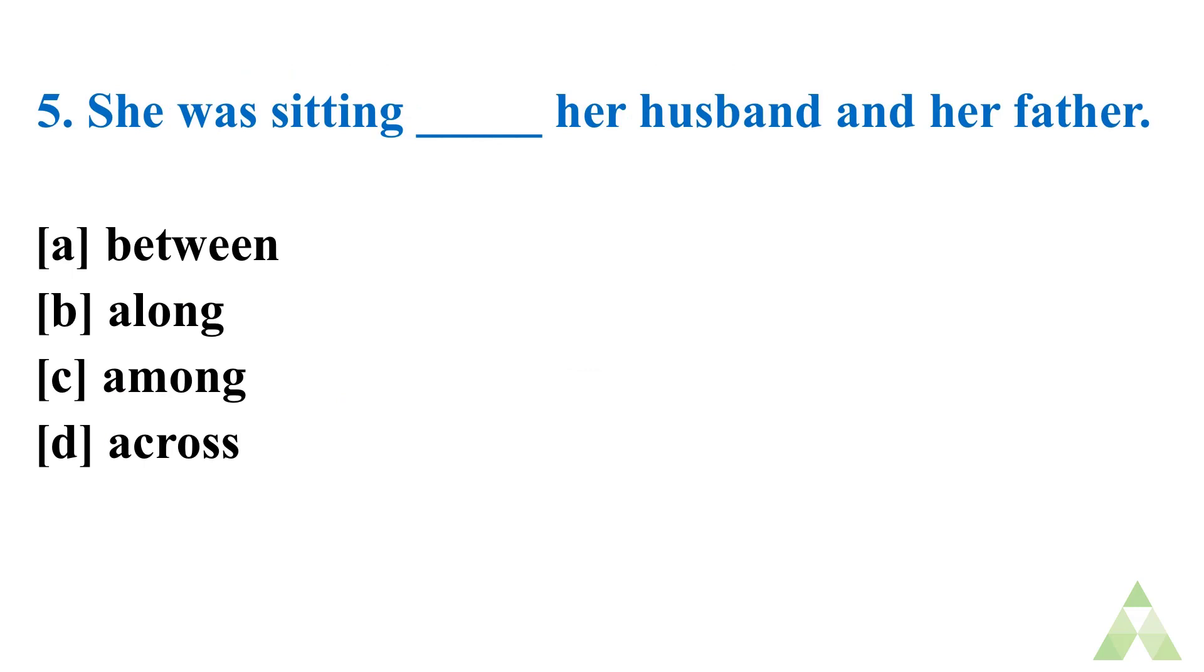Similarly question number 5. She was sitting dash her husband and her father. Option A. Between. Option B. Along. Option C. Among. Option D. Across. So quickly write down the answer in the comment box.